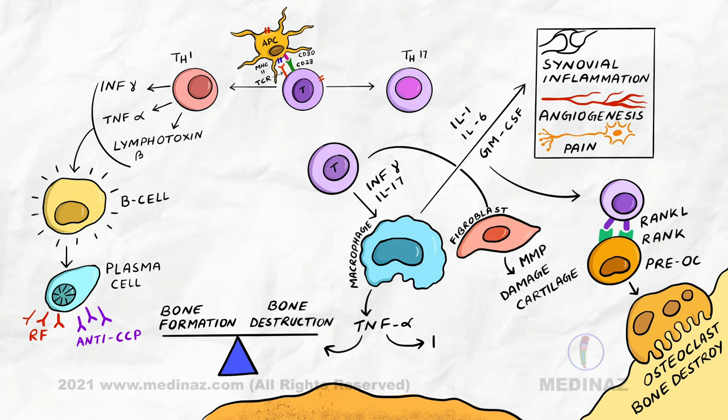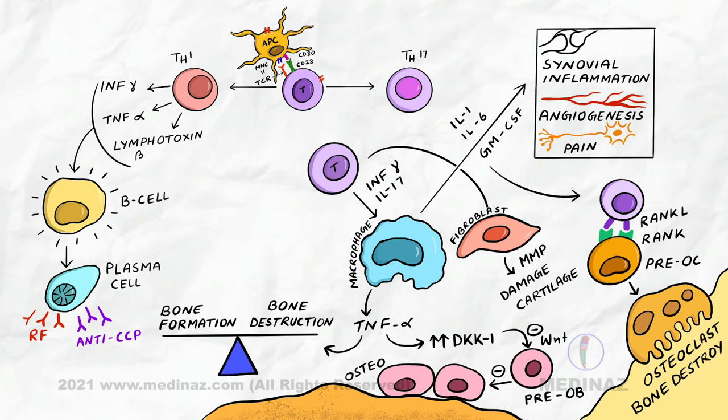It upregulates the expression of DKK-1, which can then internalize Wnt receptors on osteoblast precursors. Wnt is a soluble mediator that promotes osteoblastogenesis. That means there will be new osteoblast formation and new bone formation. In rheumatoid arthritis, bone formation is inhibited through the Wnt pathway due to the action of elevated levels of DKK-1.